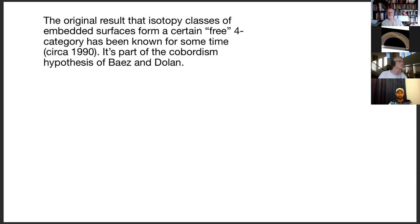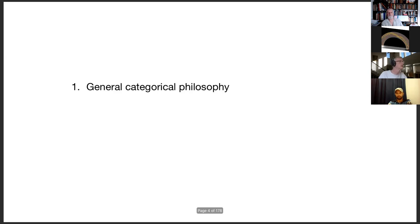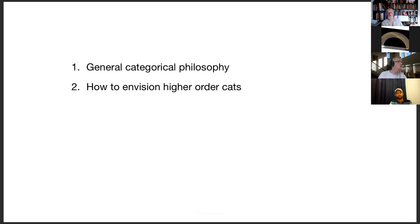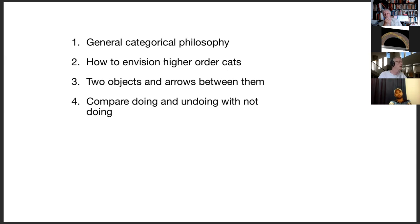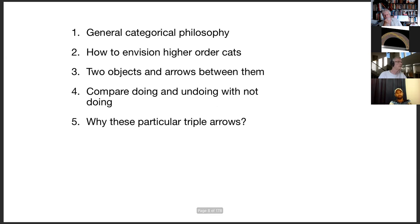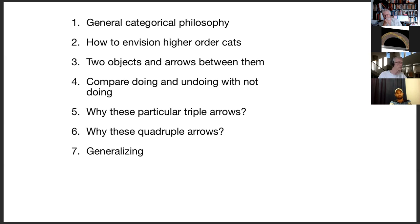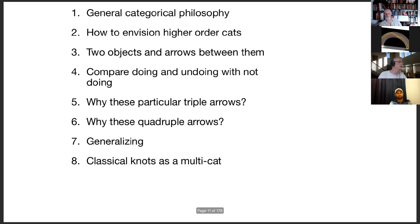People have known this result since then, but there doesn't seem to be a nicely written-down proof of it. I'm going to start out with general categorical philosophy, show you how to envision higher-ordered categories, and talk about a particular higher-ordered category that has two objects and generating arrows. We want to compare doing followed by undoing with not doing, and we'll generalize to a whole host of topological categories, finishing with classical knots as a multi-category.